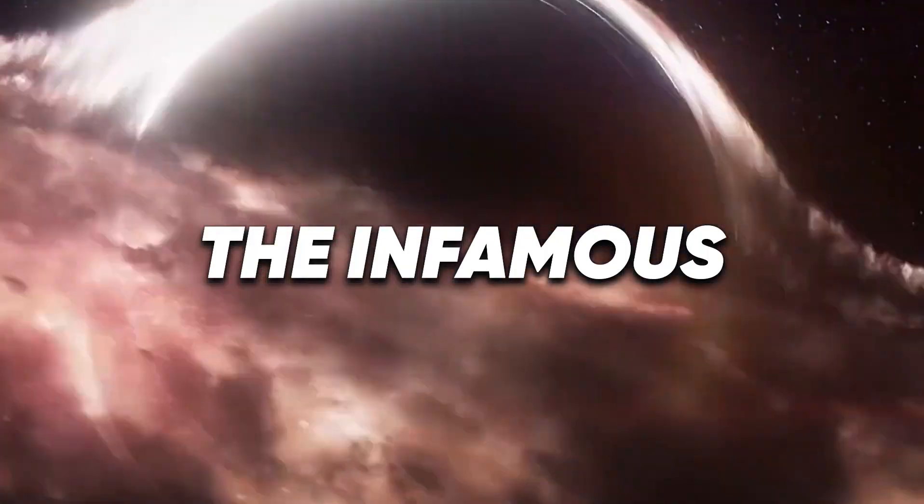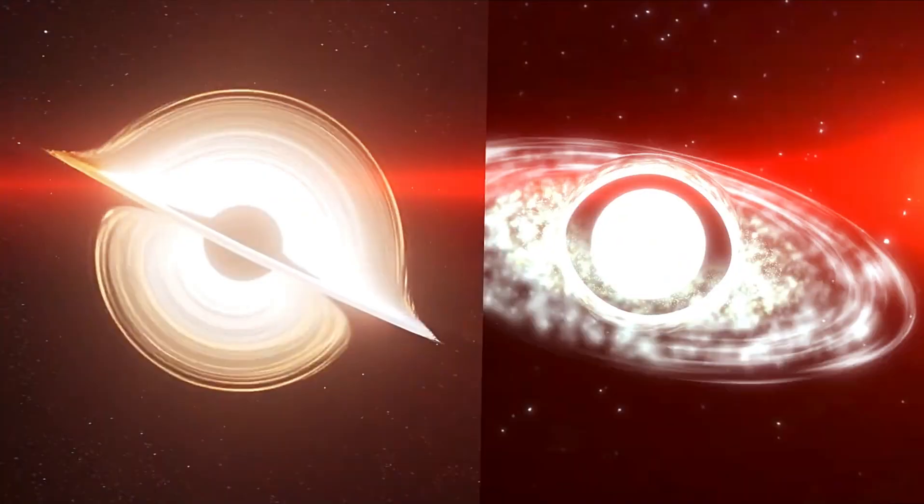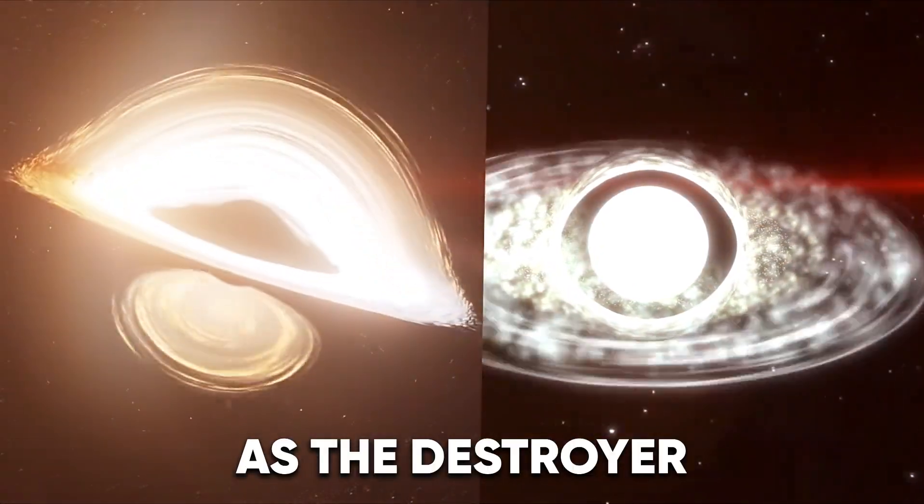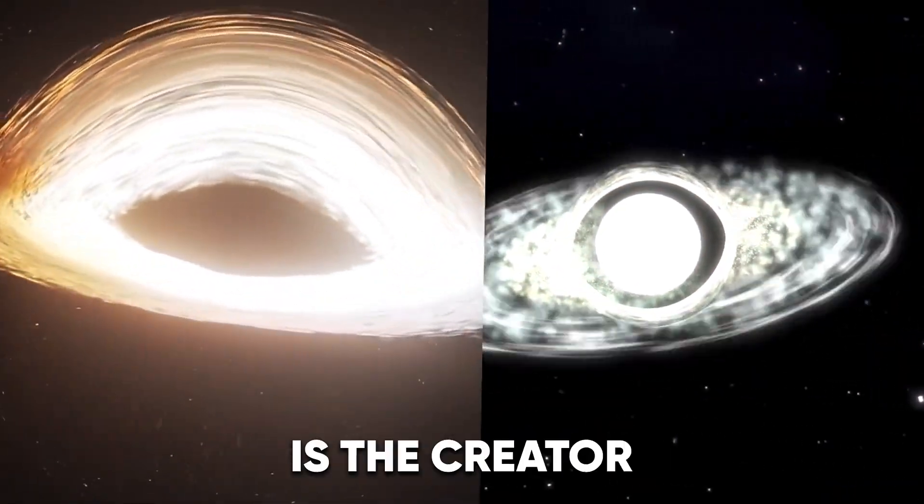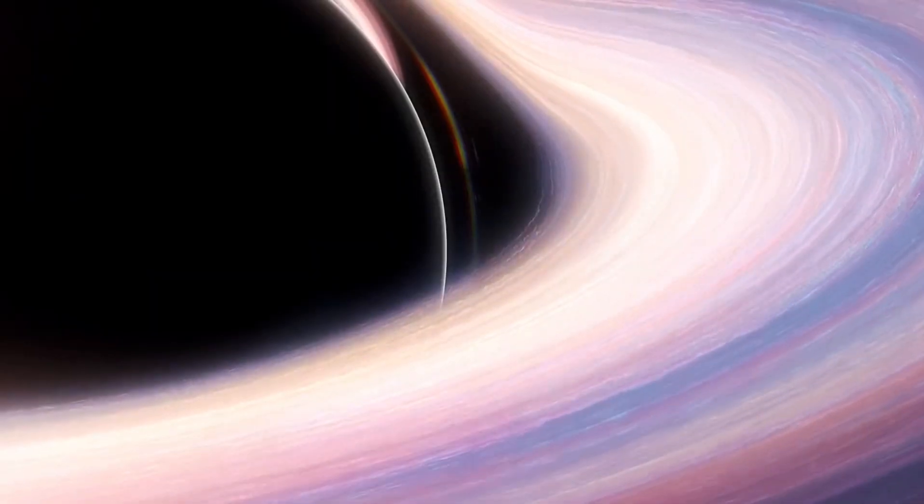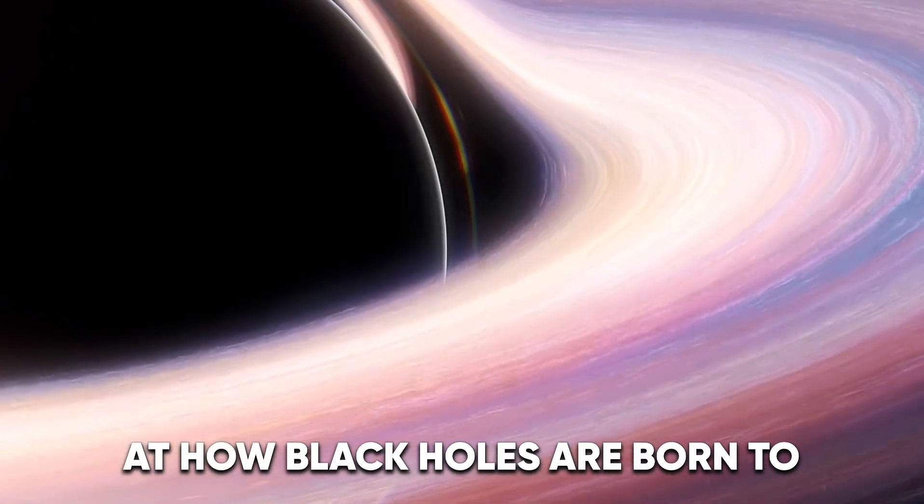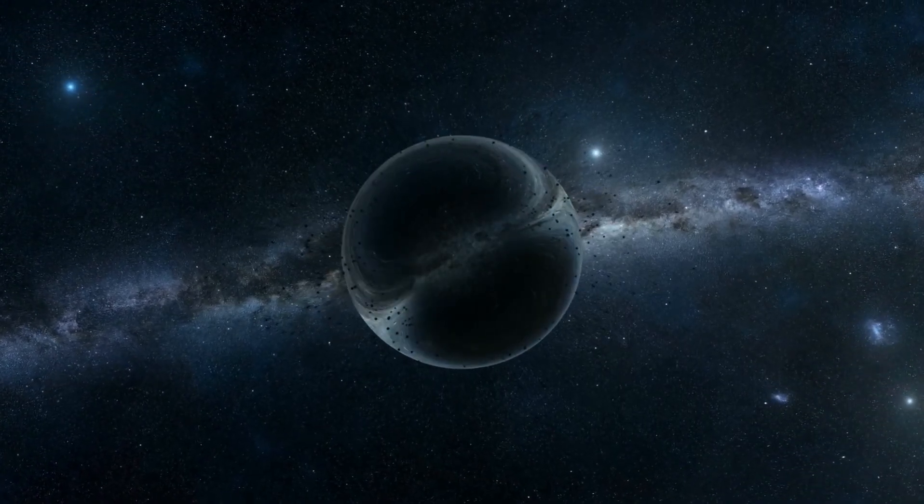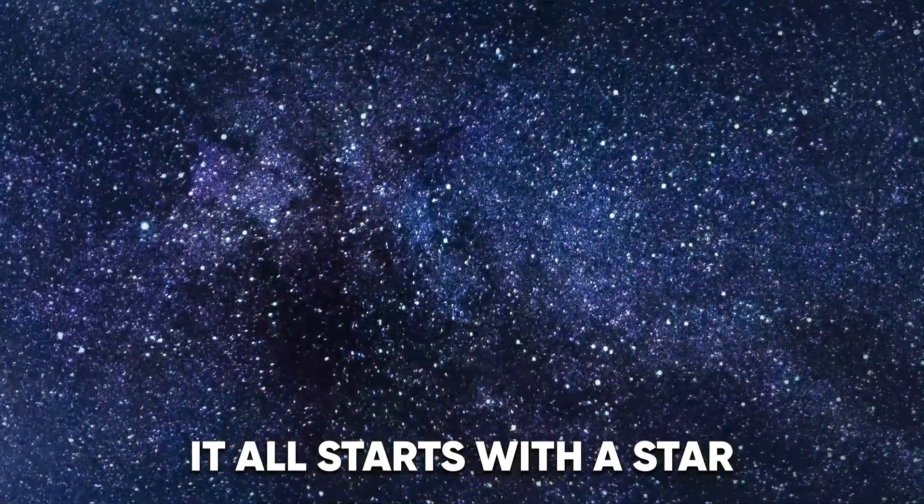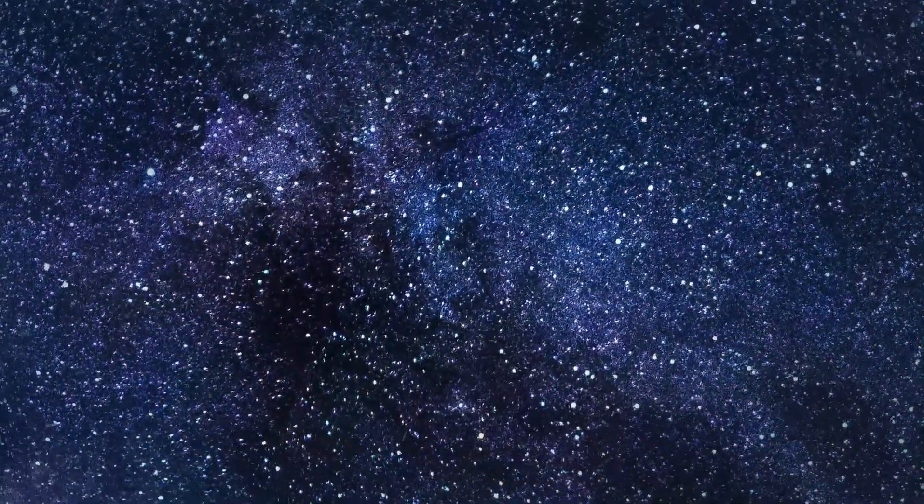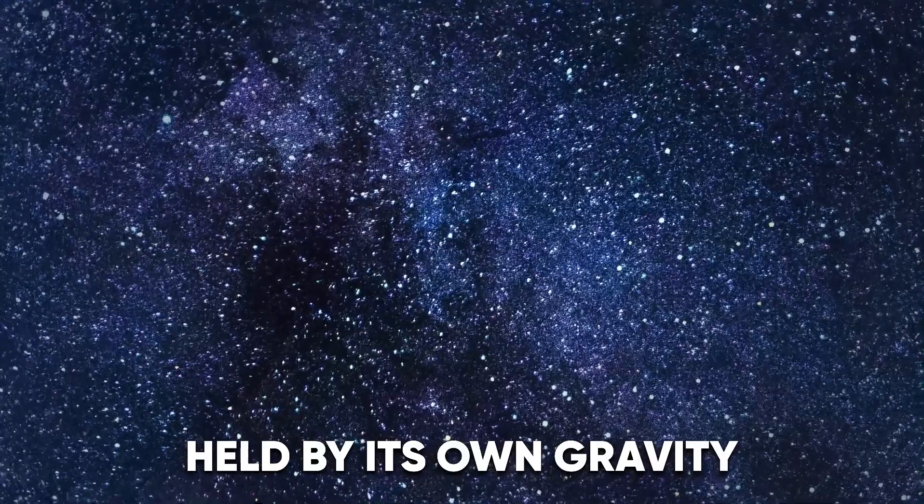The infamous black hole. For these twin siblings, a black hole can be described as the destroyer, while its brother, the white hole, is the creator. Let's take an in-depth look at how black holes are born to destroy everything in their path. It all starts with a star, a luminous ball of gas, mostly hydrogen and helium, held by its own gravity.